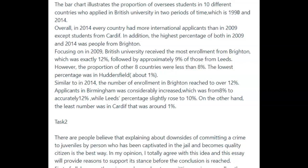You could have condensed it, so why don't we try this a little differently? 'The bar chart illustrates the proportion of overseas students from 10 different countries who applied to British universities in 1990 and 2014.' You get rid of all these extra words, and I think it reads better that way.